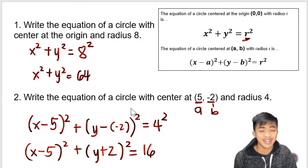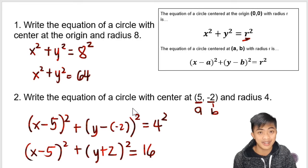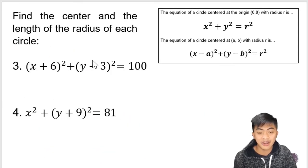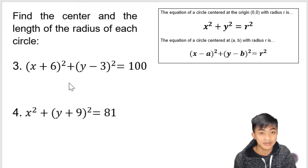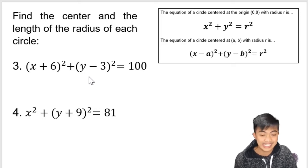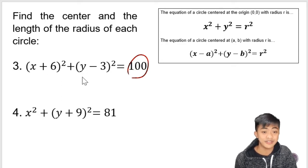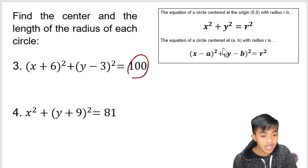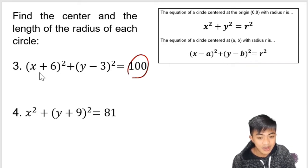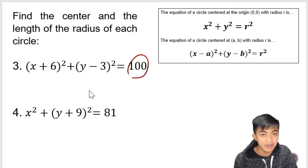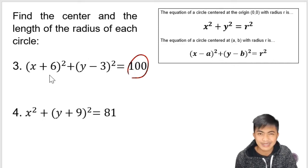But what if the equation is given and we are asked to determine the center and the radius? We're going to find the center and the length of the radius of each circle. So number 3, the equation is given. This is the reverse process of what we did in the previous slide. What we're going to look into are the numbers here. Before we get the coordinates of the center, we have to rewrite the equation in standard form. X and 6 are separated by addition, but in this form it should be separated by subtraction.